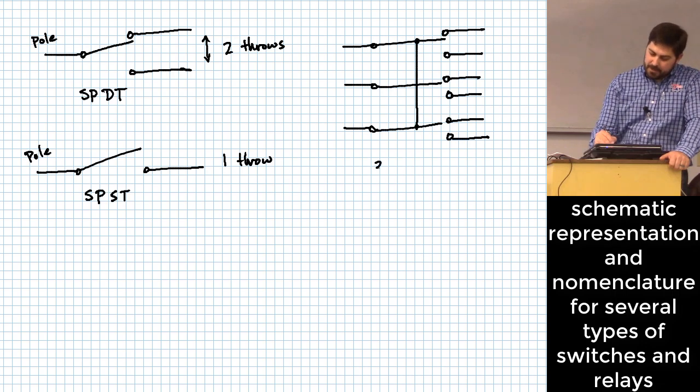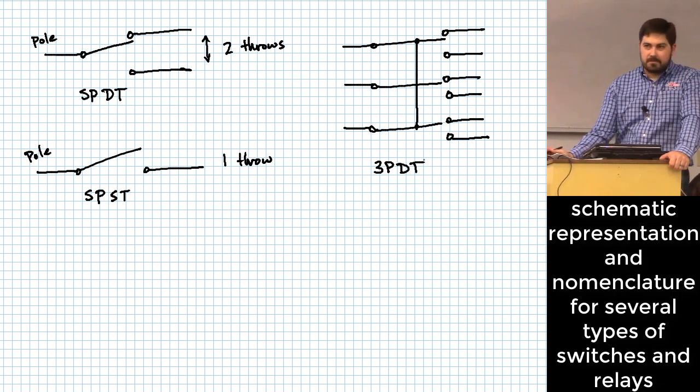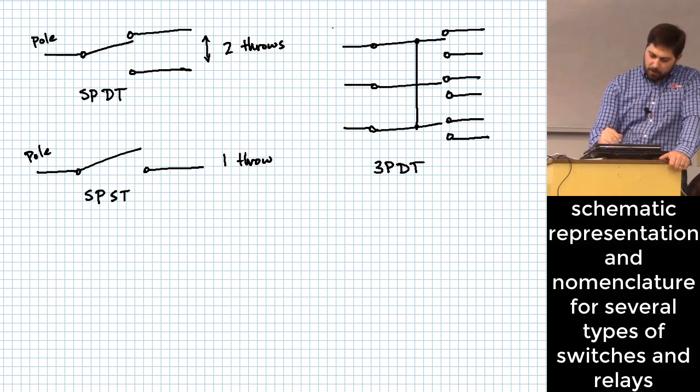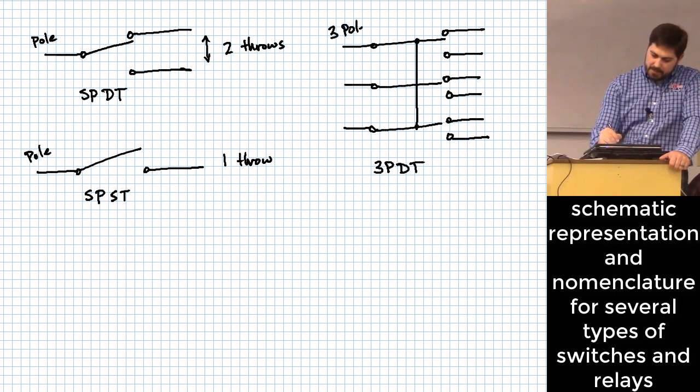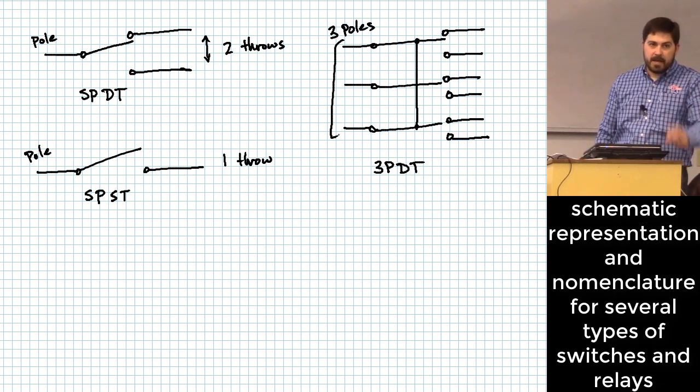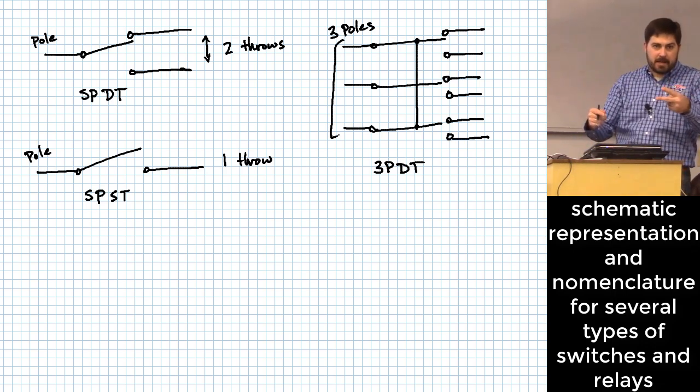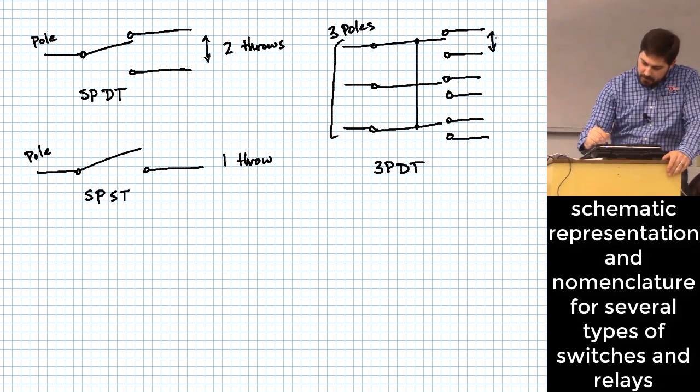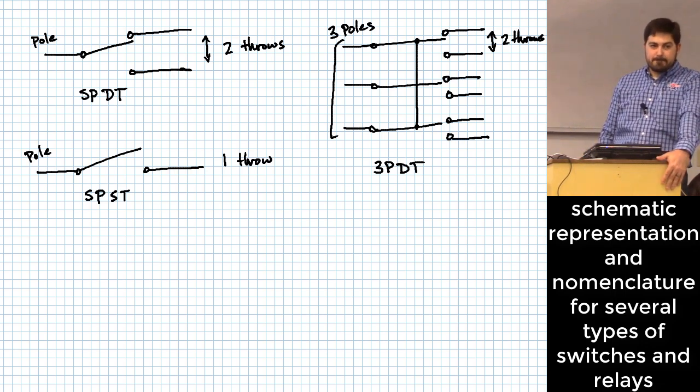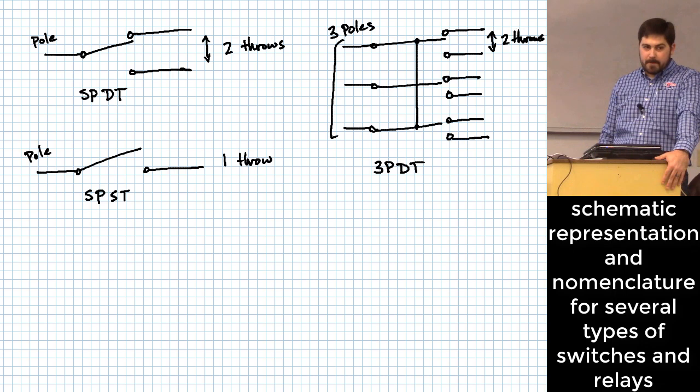Typically what they do is they call it 3PDT. Why is that? Three poles, that's the number of these things over here. Each pole has two choices as to where it can connect, and so those are two throws.